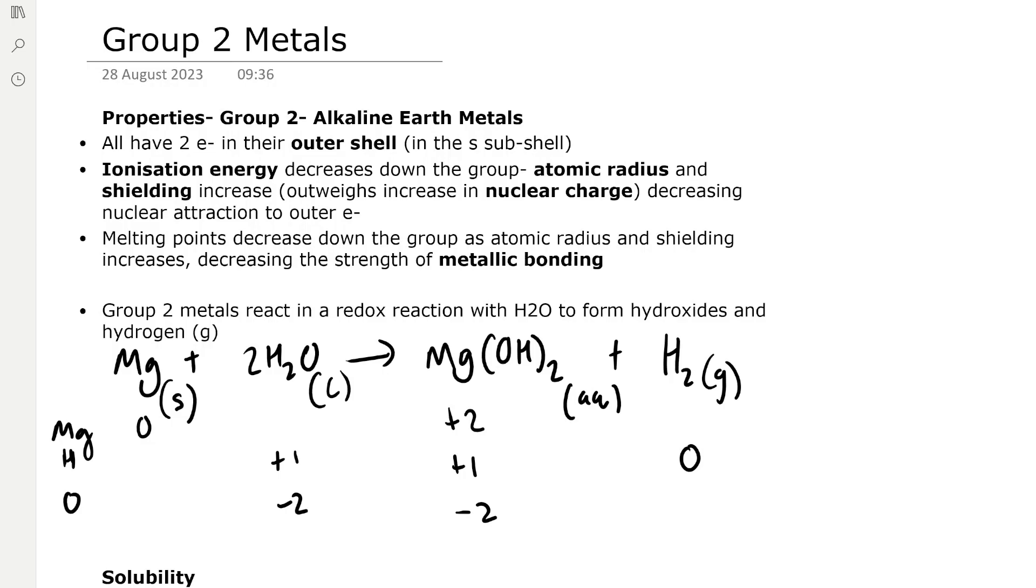So the properties of group 2, which are the alkaline earth metals. They all have two electrons in the outer shell, so in the S subshell.